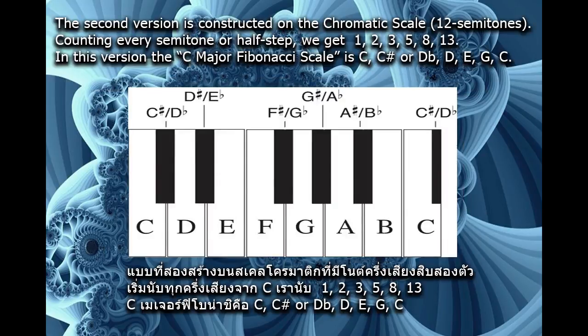The second version is constructed on the chromatic scale — 12 semitones. Counting every semitone or half step, we get 1, 2, 3, 5, 8, 13.